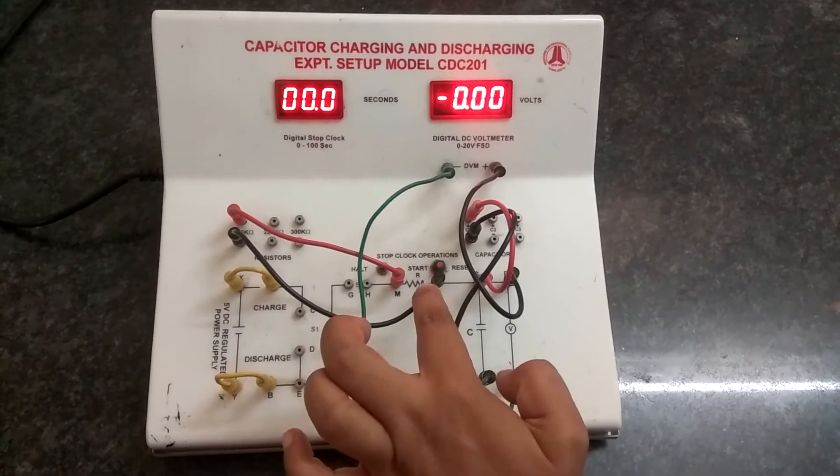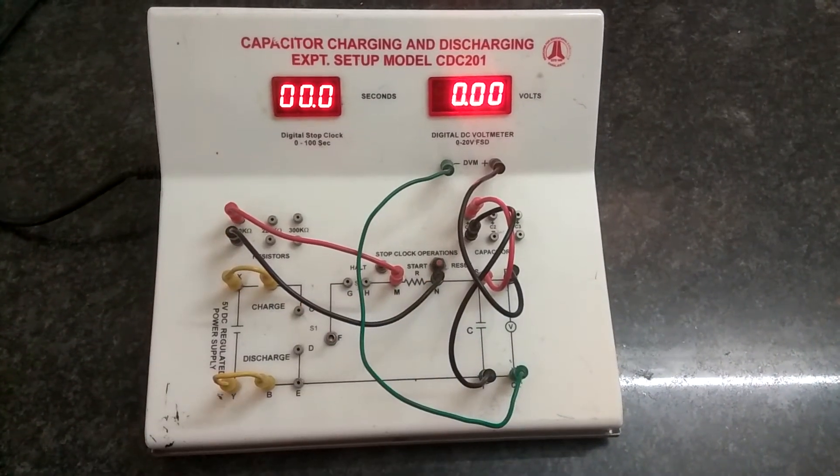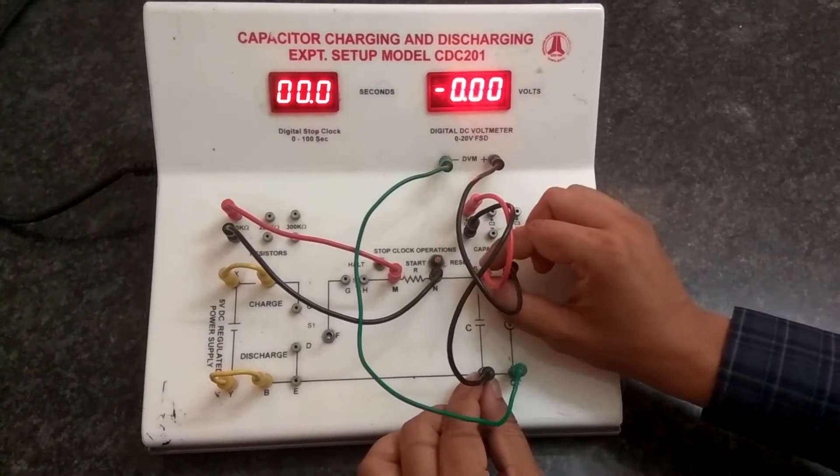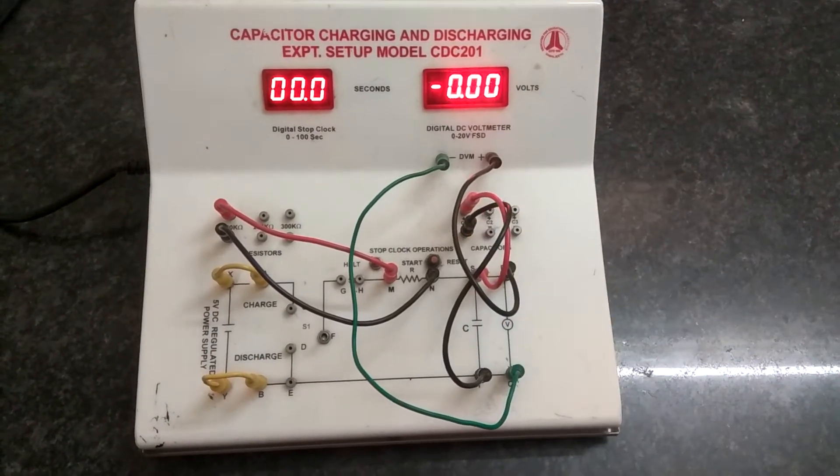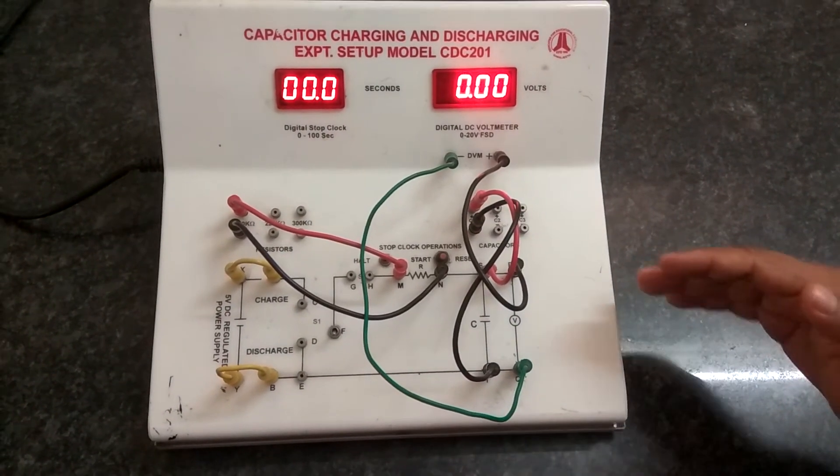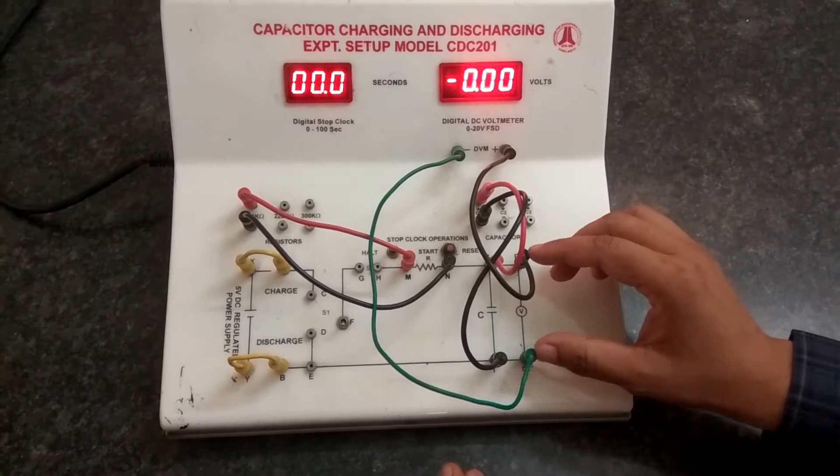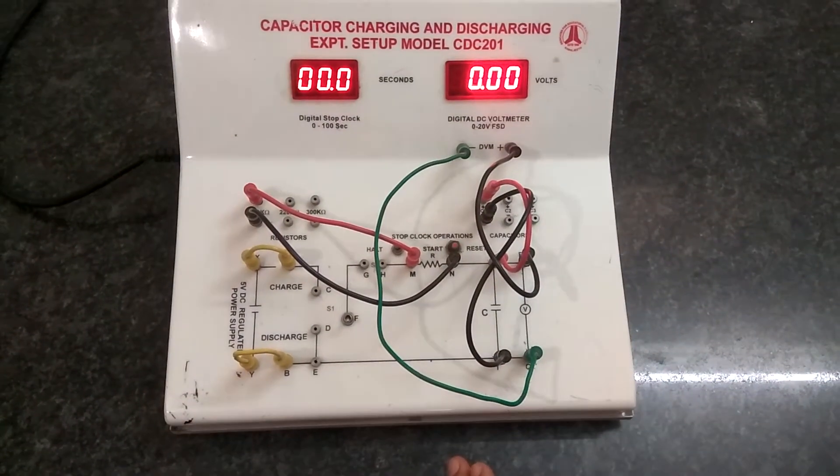And the resistance has been connected to the 100 kilo ohms. And one of the capacitors we have used, that is C1, across which the voltage will be measured and it is connected to the digital voltmeter.